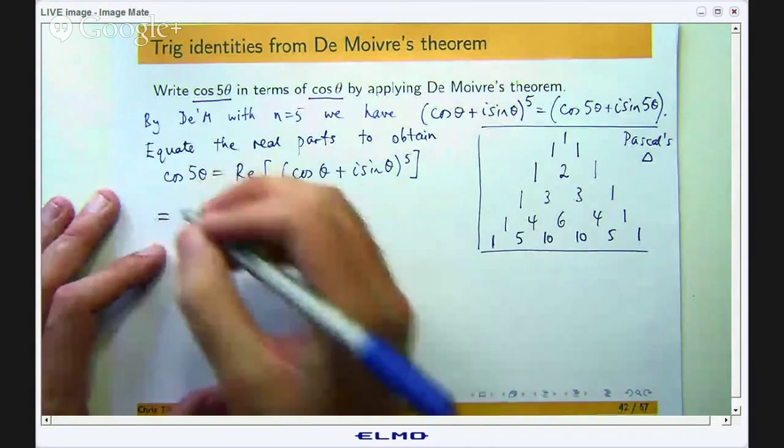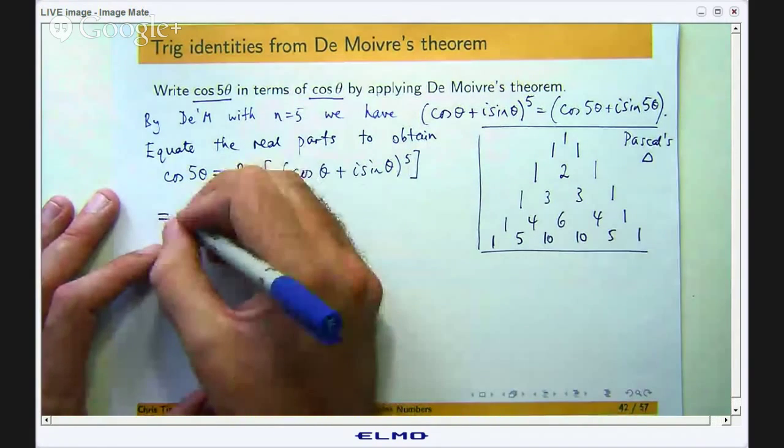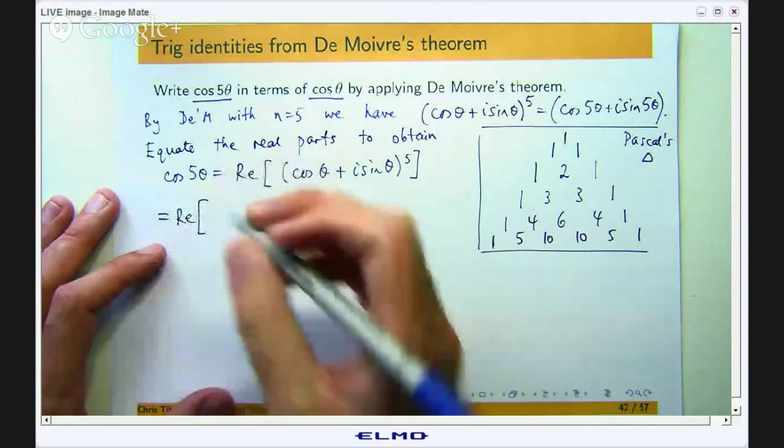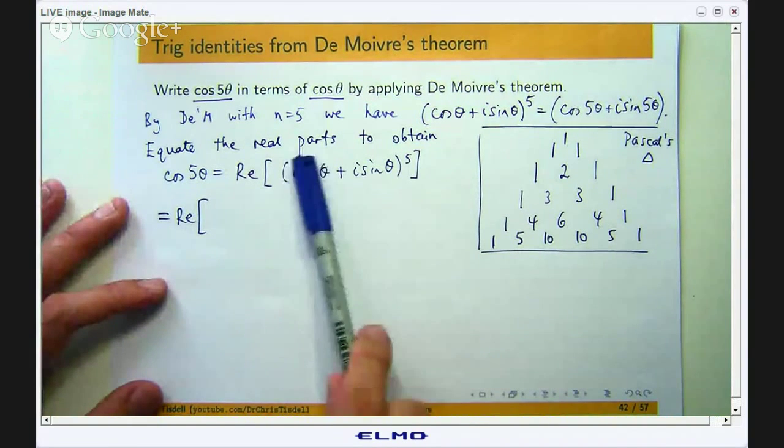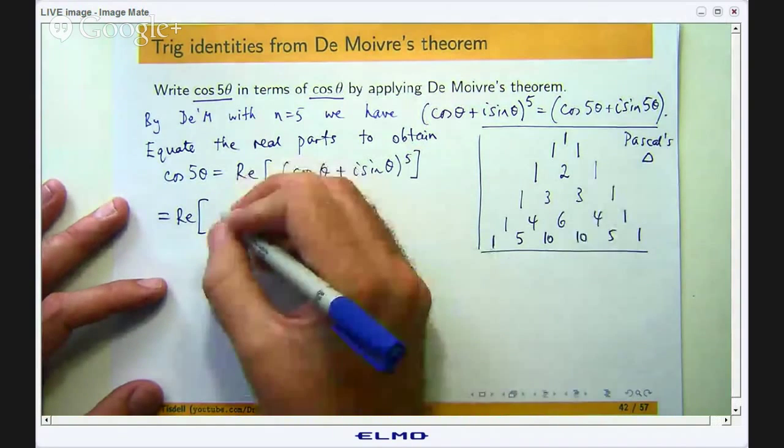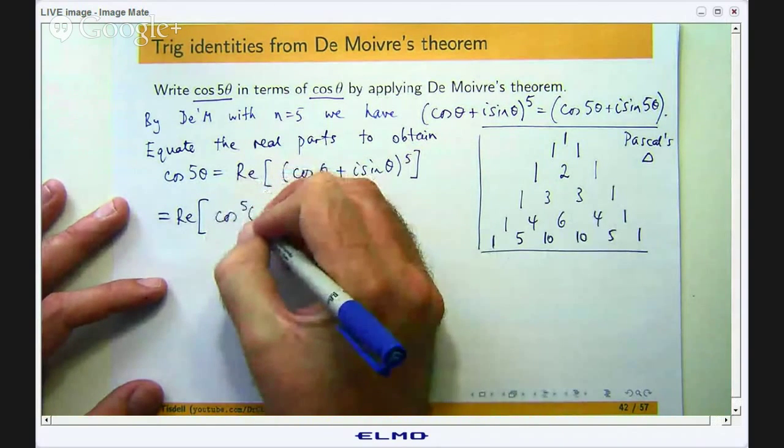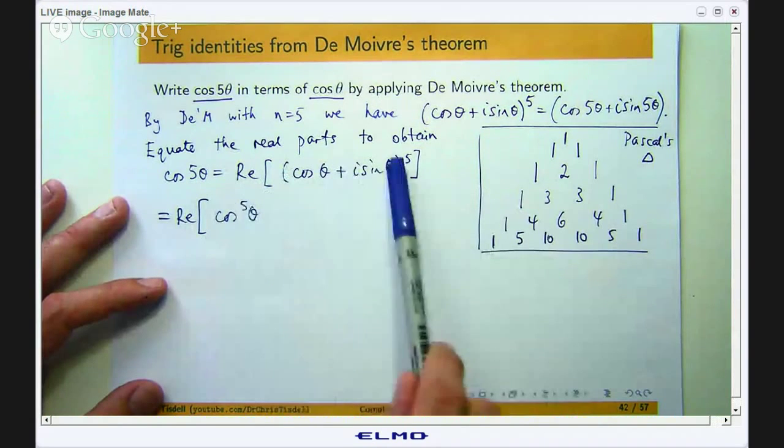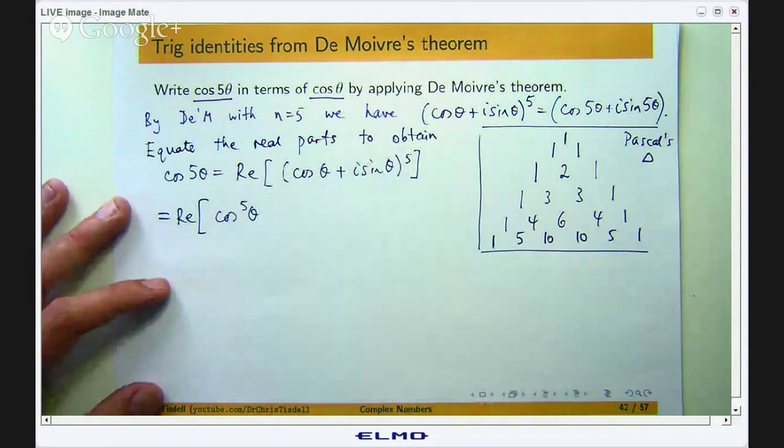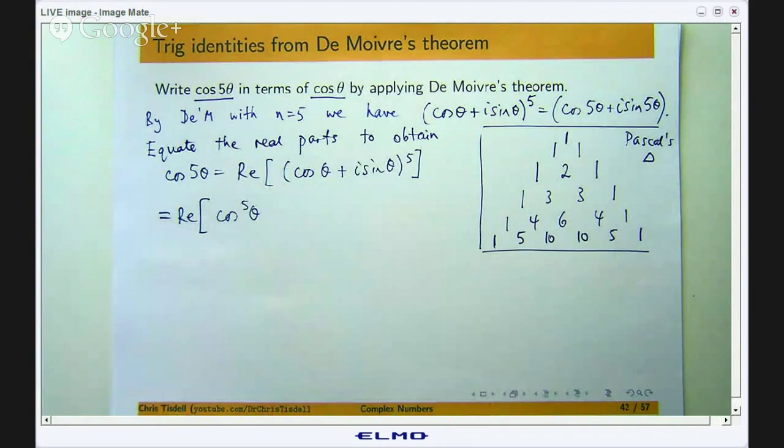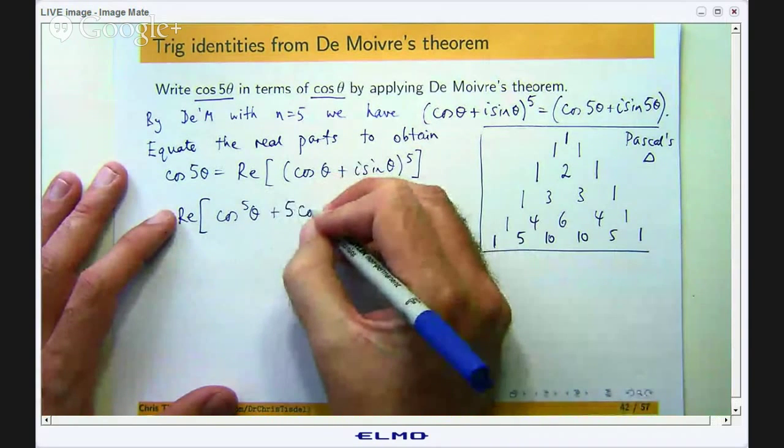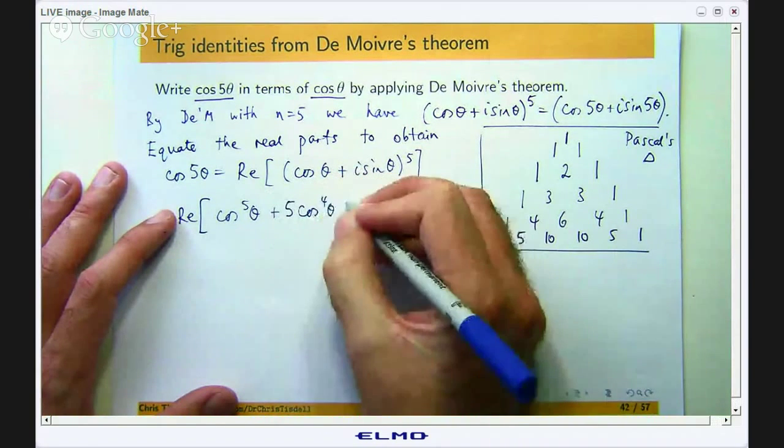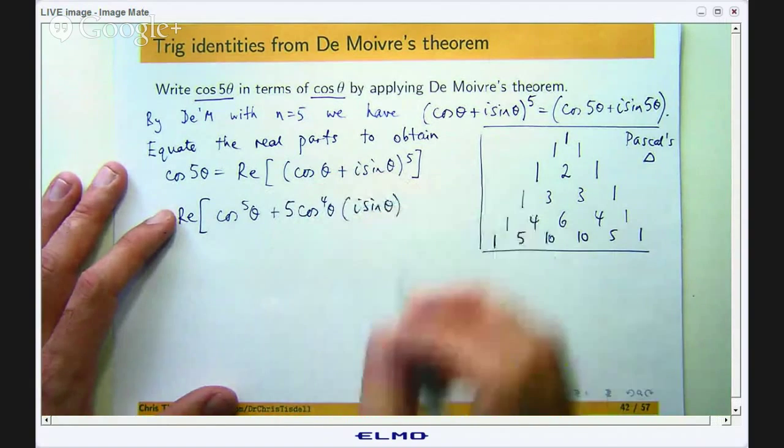Alright, so what we are trying to do is expand this and look at the real part. It looks like it is going to get messy but we are just going to cherry pick the real parts out of it so we do not actually have to simplify it as much as you would think. We take this, raise it to the power of 5 and multiply it by 1. Then decrease this power by 1 and increase the power of i sin theta by 1 and multiply by the coefficient. So, we are going to get 5 cos to the power of 4 theta times i sin theta to the power of 1.